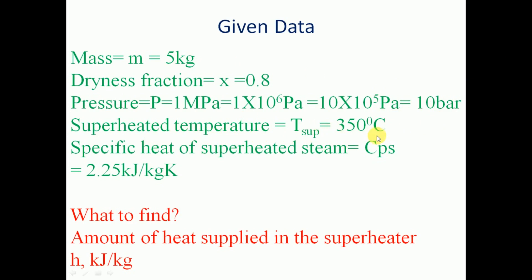Superheated temperature T_sup = 350 degrees Celsius. Specific heat of superheated steam CPS = 2.25 kilojoule per kg Kelvin. We have to find the amount of heat supplied in the superheater.